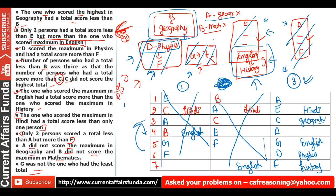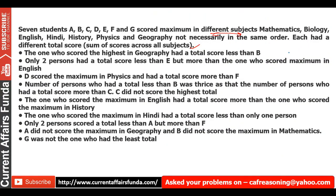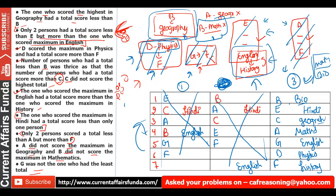So A gets either Maths or Biology. B cannot get Maths (given clue), so from the remaining two subjects — Maths and Biology — A gets Maths and B gets Biology. This completes the solution: all 7 persons have been assigned their ranks and the subject in which each scored maximum.